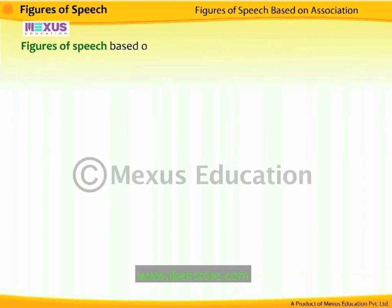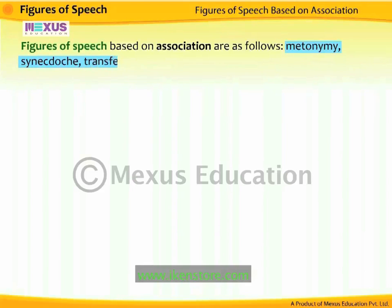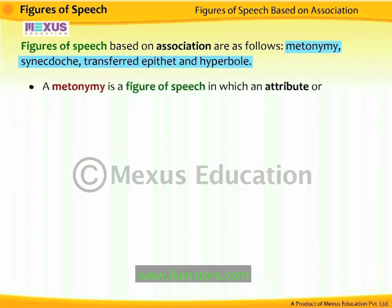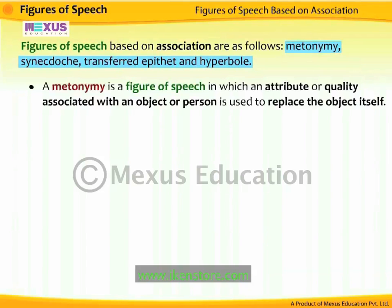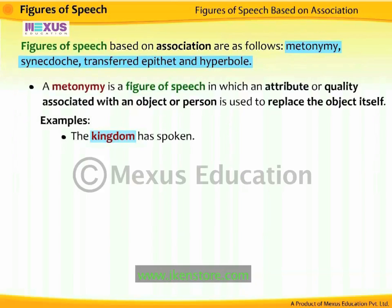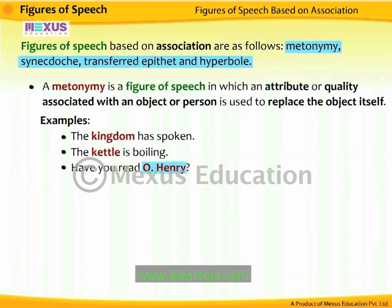Figures of speech based on association are metonymy, synecdoche, transferred epithet, and hyperbole. A metonymy is a figure of speech in which an attribute or quality associated with an object or person is used to replace the object itself. For example: 'The kingdom has spoken' — kingdom is a metonymy for the citizens. 'The kettle is boiling' — kettle is a metonymy for the water it holds. 'Have you read O. Henry?' — O. Henry is used as a metonymy for his literary works.